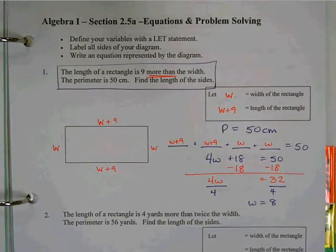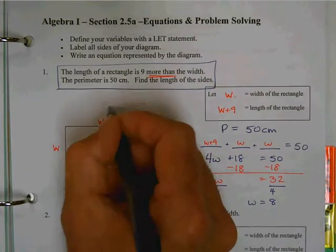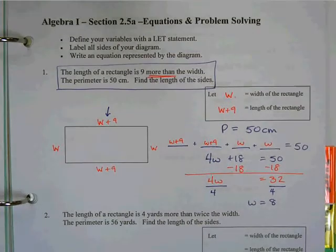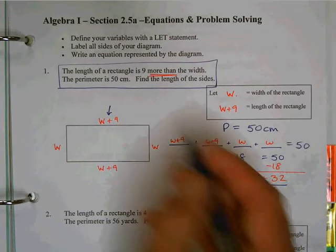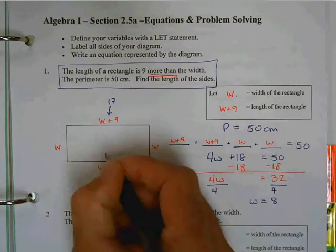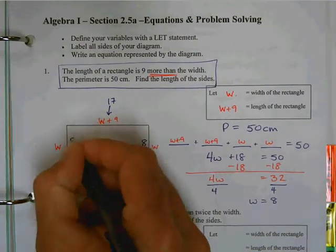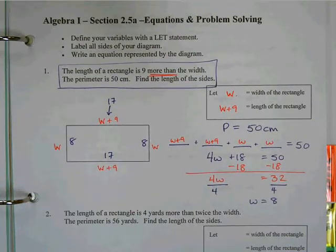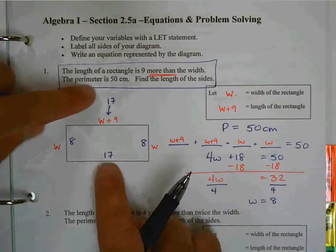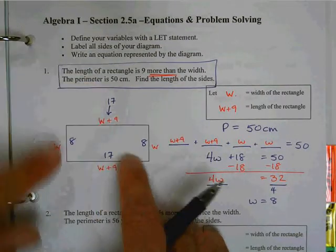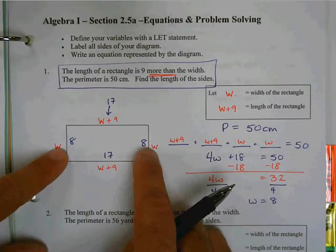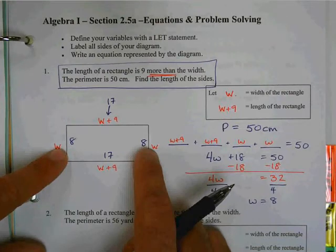How can I make sure that this is right? What's 8 plus 9? 17. So I'm going to label my four sides: 8, 8, 17, and 17. Let's add these up. Double that, that's 34. Double that, that's 16. What's 34 and 16? 50. So there we got it.